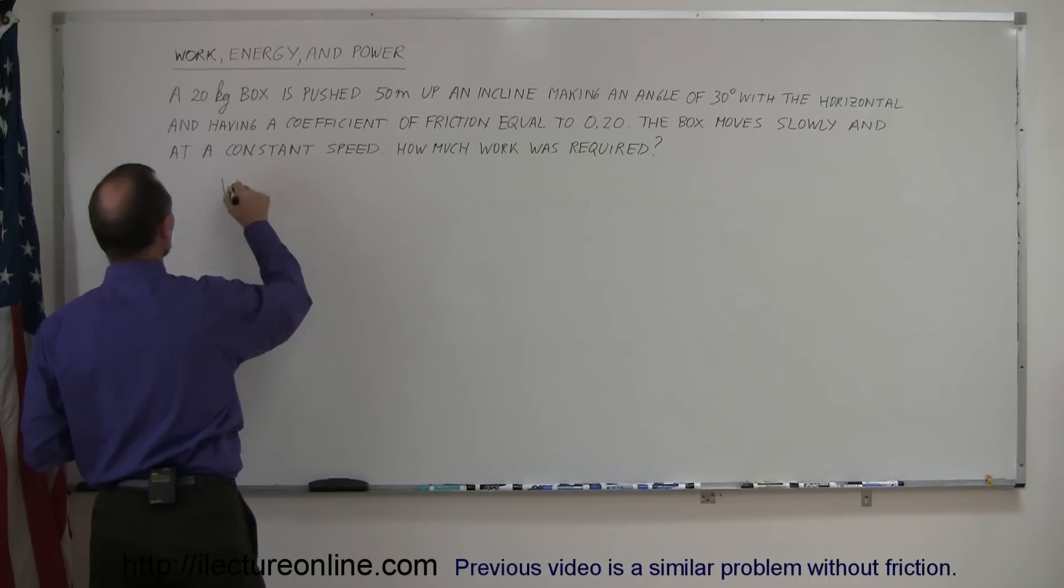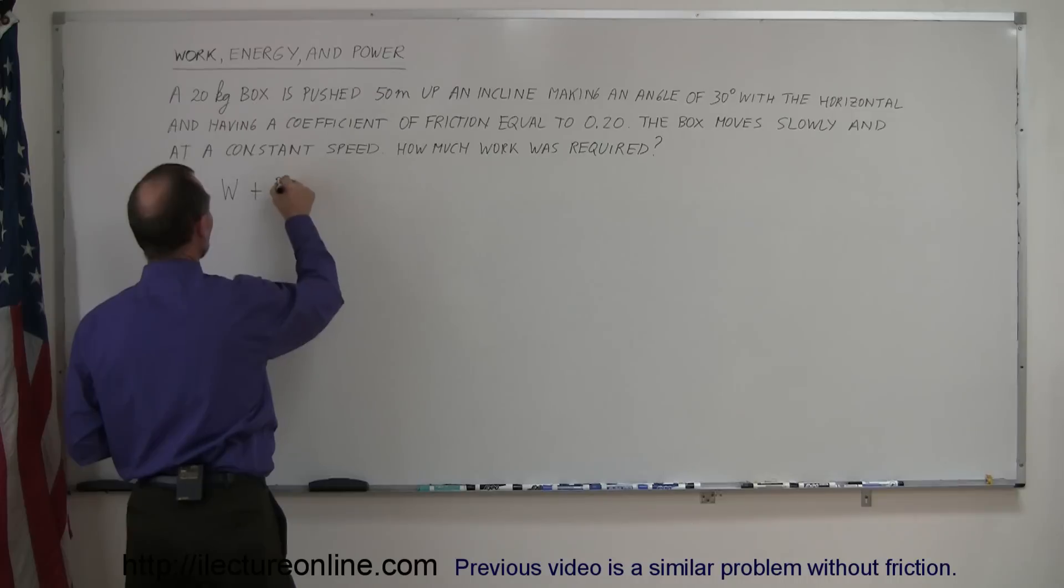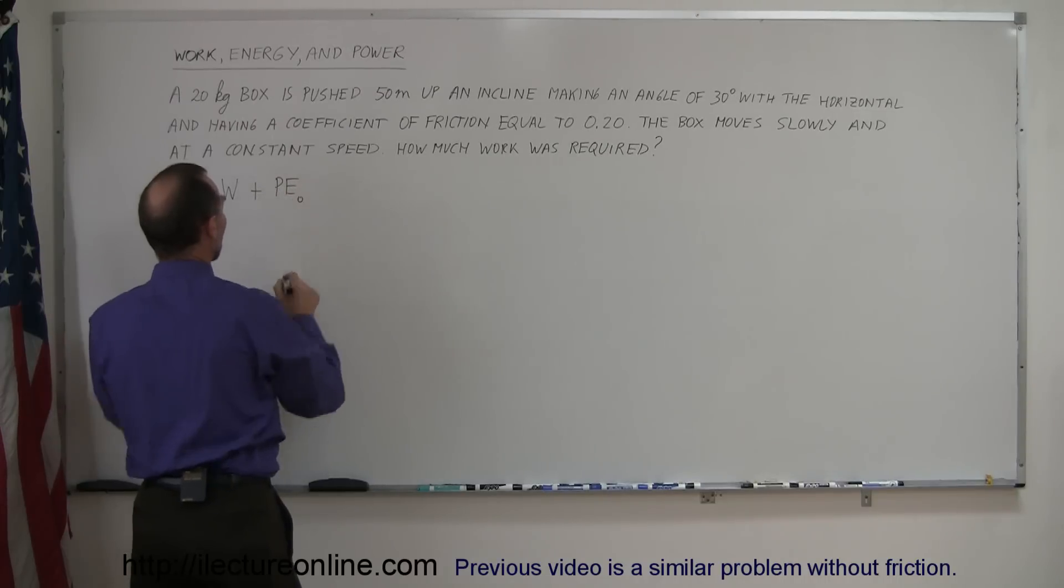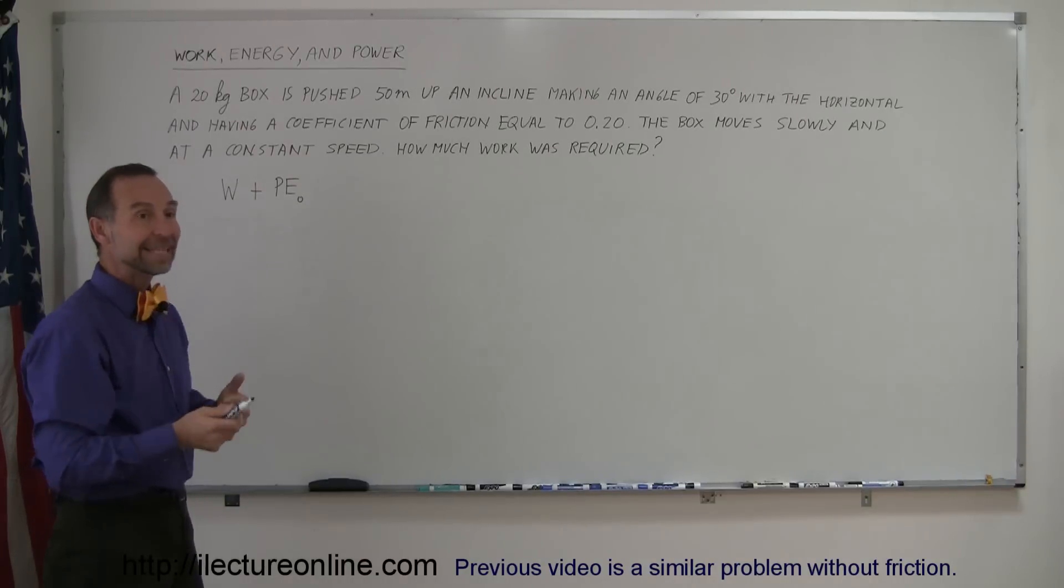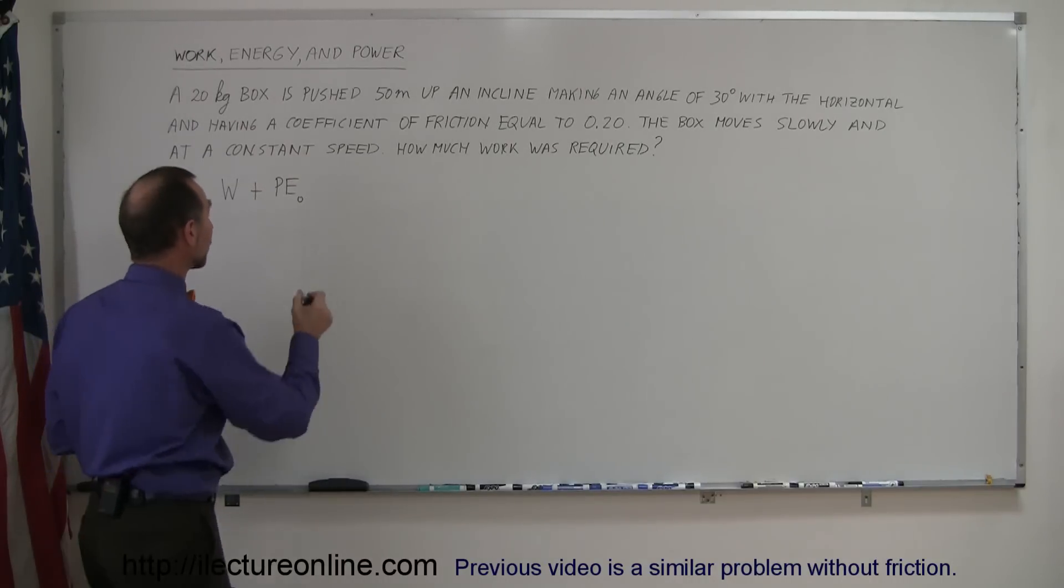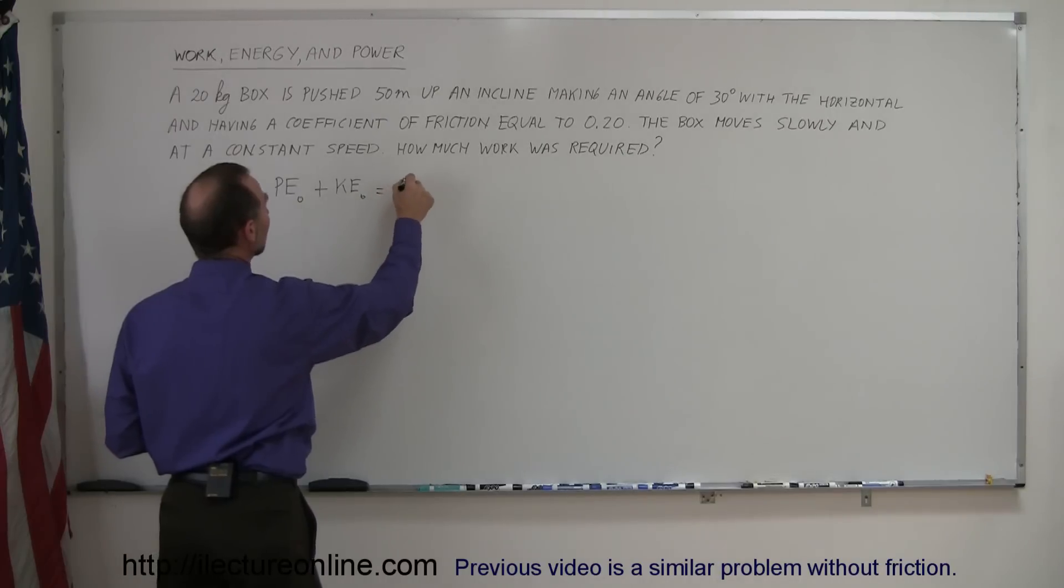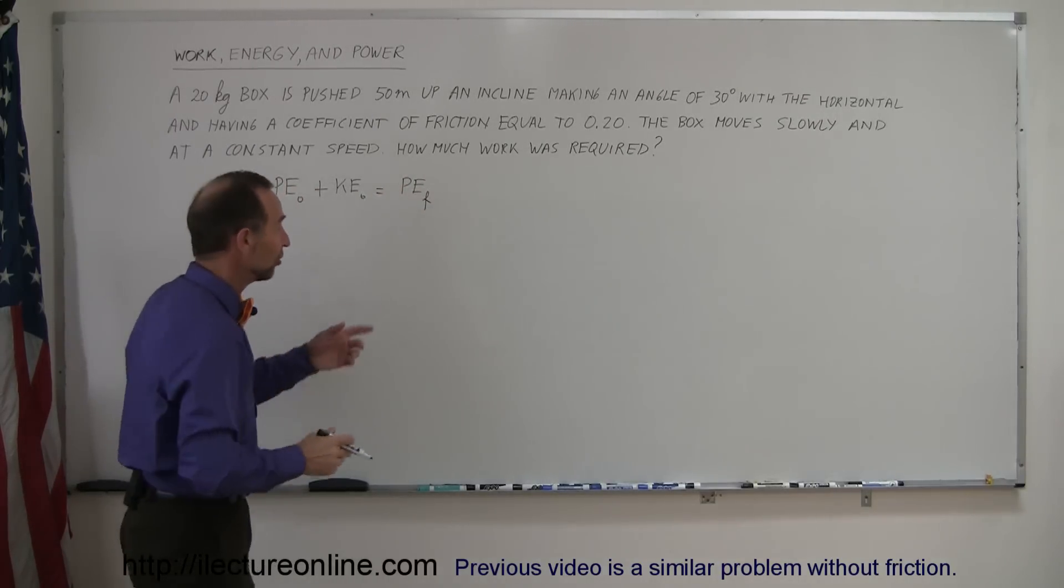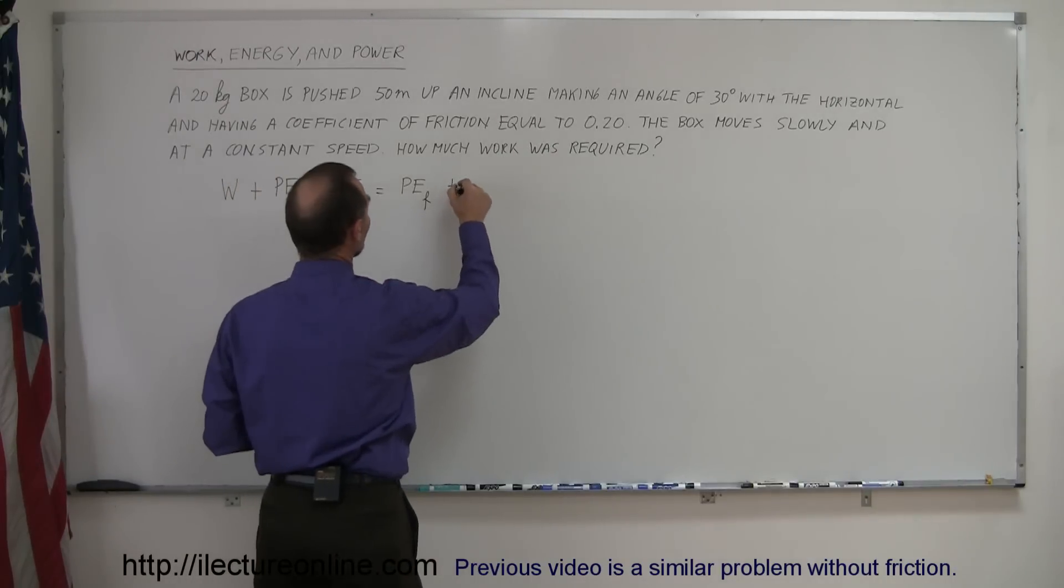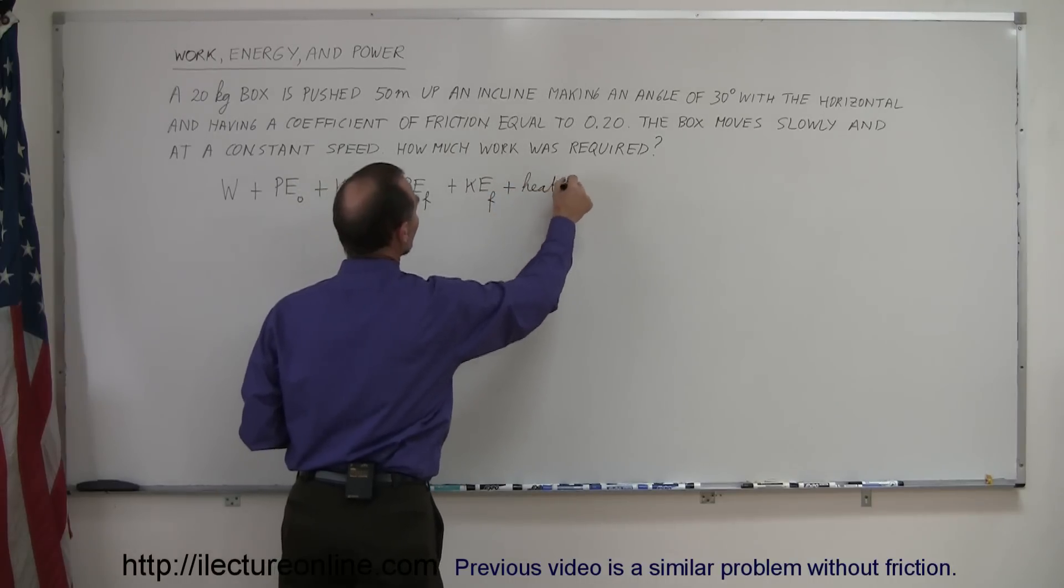The work put into the system, and of course work is force times distance, plus whatever potential energy you started with, so I'm going to call that initial potential energy, and this little zero symbol there, that's a sub-naught symbol as we call it, means the initial energy, the one that you started with, plus any sort of kinetic energy that you started with initially, must equal the potential energy you end up with at the end, so we call it final potential energy, that's what F is for, plus the final kinetic energy,